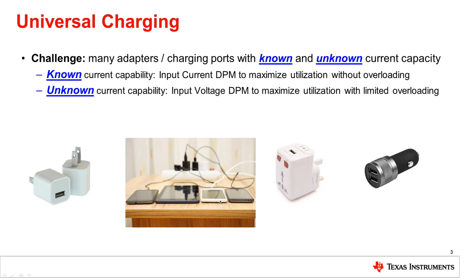In many cases, however, the current capability of the adapter is not known. With barrel jack adapters, the size of the barrel jack indicates the voltage, but unless a proprietary mechanism is used, the current that the adapter is able to provide is not known. How then can we ensure that the adapter isn't overloaded when the adapter's capability is unknown? In this case, input voltage DPM is the best method.